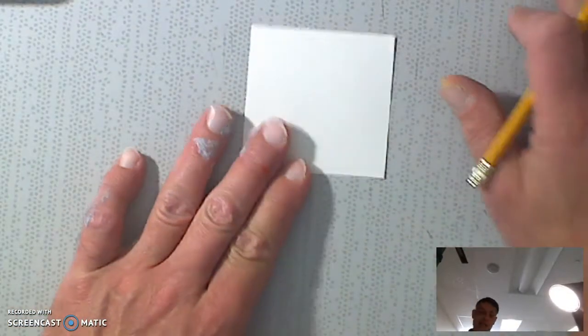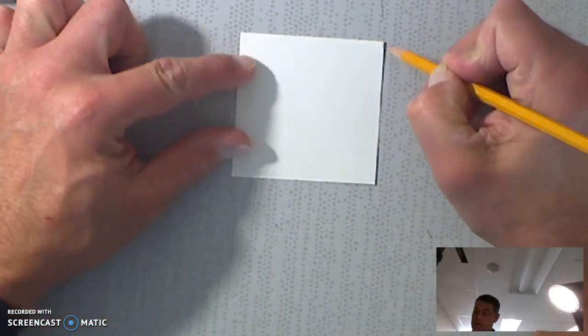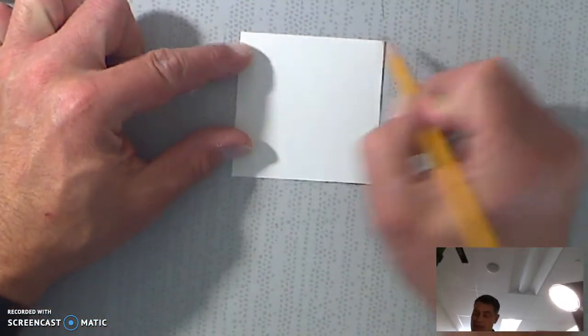Okay, so to start your tessellation, you take your paper. You're first going to draw from this corner to this corner any old way.